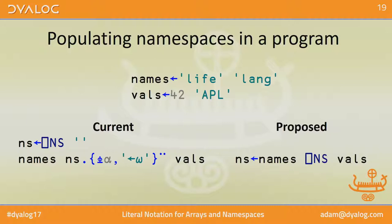What if we could write just that? The current ⎕NS takes a simple character vector as its left argument, which becomes the name of a named namespace. Therefore, if the left argument instead was a list of names, there's no ambiguity and you could just return a new namespace generated by pairing up those names with those values. That's one related extension we could do.